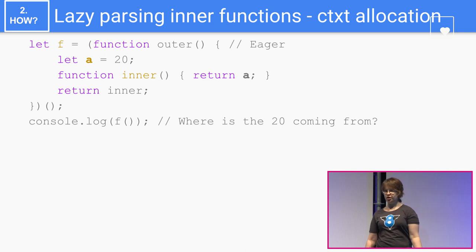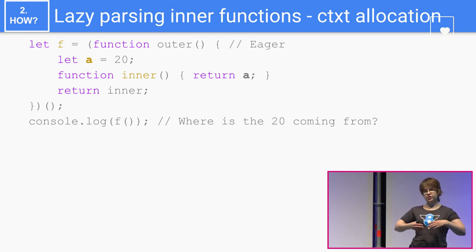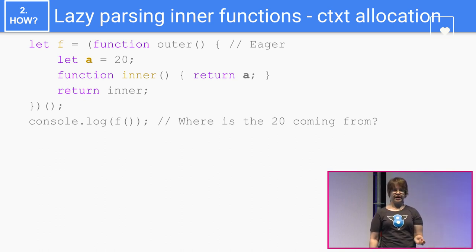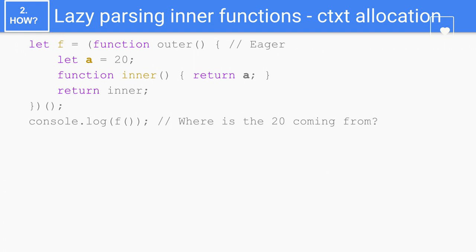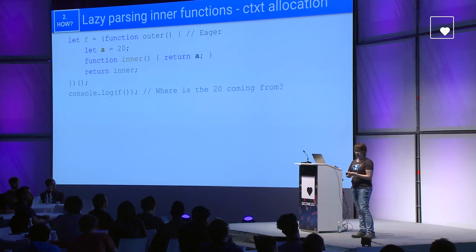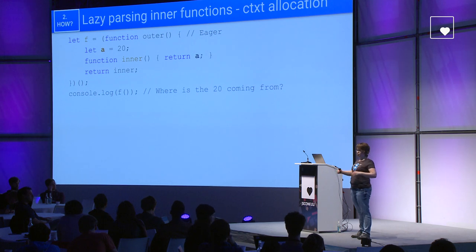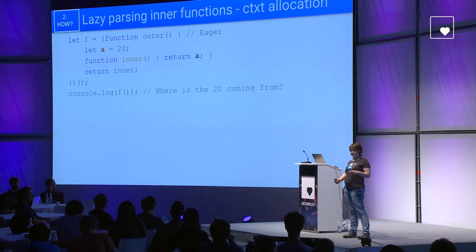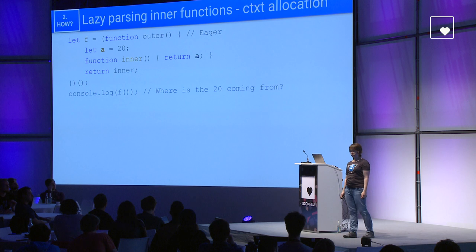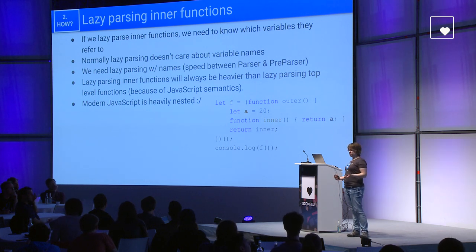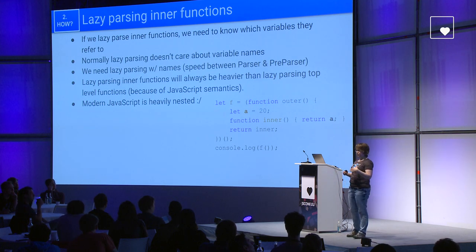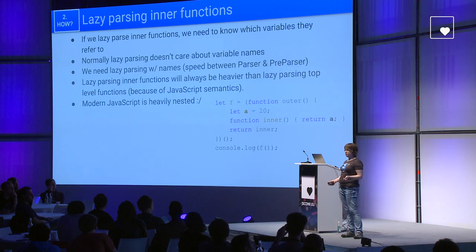But where is the 20 coming from? Normally, when you call a function, its local variables are put on the stack. But here, when we call f, we are not inside a call to outer, so it definitely cannot be on the stack. The answer is it's in the function context — an object which the inner function refers to and keeps alive. When inner accesses variable A, it reads it from the function context. So if we want to lazy parse inner functions, we need to know which variables they refer to, so we can put those in the function context and not put other variables there — accessing from context is much slower than from the stack.